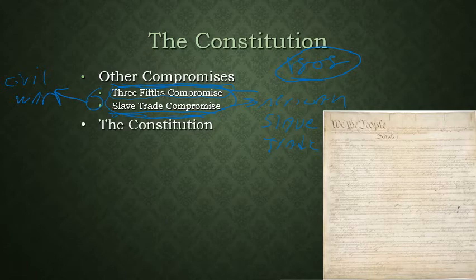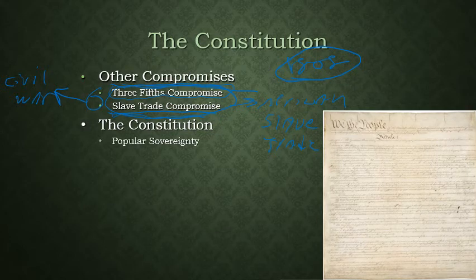The next piece is the creation of the Constitution. We recognized the problems with the Articles of Confederation — we need a stronger system, a stronger national government — and we also need to protect against our system of government becoming something like a monarchy.